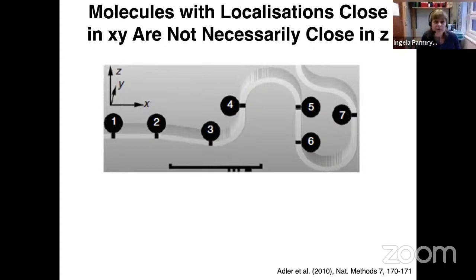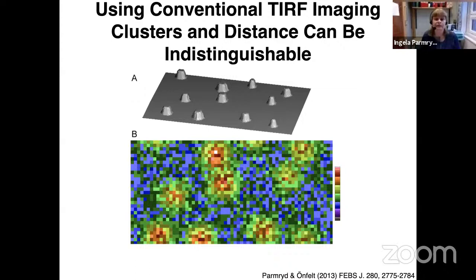Another consideration concerns how we think about clustering, often studied with TIRF — total internal reflectance imaging — looking at the very bottom of a cell attached to a coverslip. In a simulation with pillars or protrusions touching the coverslip first, a membrane marker will appear clustered simply due to the accumulation of membrane where the pillars contact the surface. The only thing that's happened is that there's more membrane there — so apparent clustering may not reflect true molecular clustering.